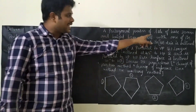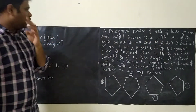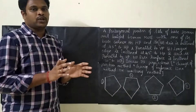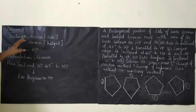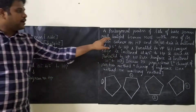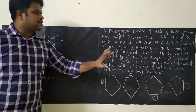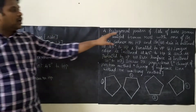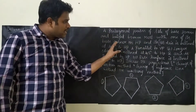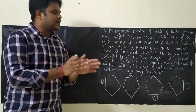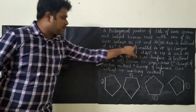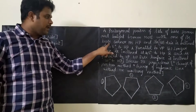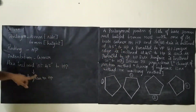A pentagonal prism of side of base 30 mm. First, we need to identify what kind of diagram we are going to draw. In our case, we are going to draw a pentagon of base side 30 mm. Height is 60 mm, so side will be 30 mm and height will be 60 mm. It rests with one of its base corners on HP, so orientation would be corner.